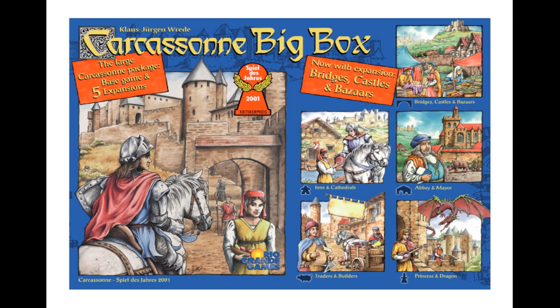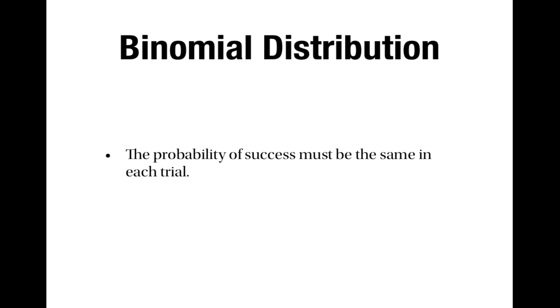For example, suppose that we play a board game several times in a row. We might be interested in the probability that I win 2 out of these games. The binomial distribution enables us to calculate that probability. There are a couple of things to bear in mind: the most important is that the probability of success must be the same in each trial. In particular, the trials must be independent — the outcome of one game can't affect the probability of winning the next.